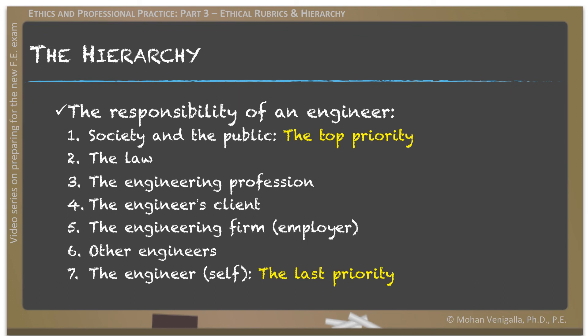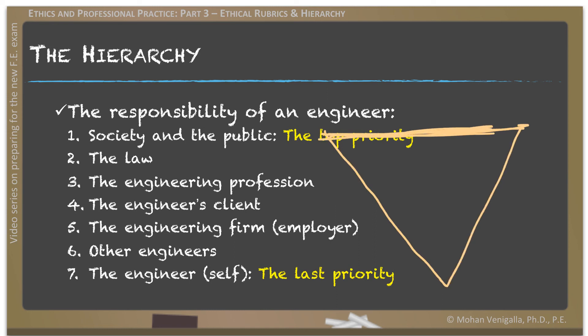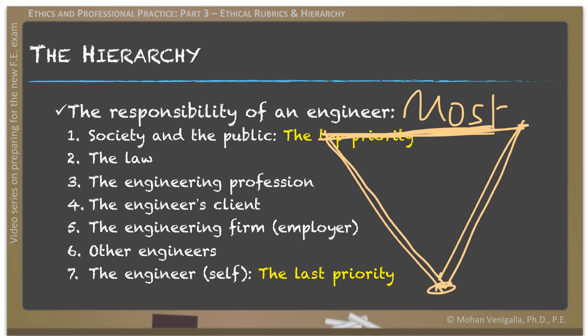Now take a good look at the top priority and the last priority. This is what I call an inverted pyramid — at the top you have the highest number of people served, at the bottom the lowest number. The most good to the most people should be your top priority; the most good to the lowest number — that is, yourself — has to be the last priority. Keep this hierarchy in mind; if there is one takeaway from this entire video series on ethics, this is it.